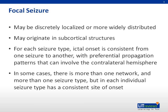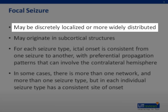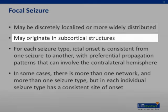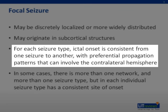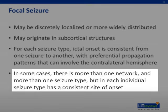A focal seizure, as mentioned earlier, originates from networks within one hemisphere. It may be localized to a portion of the hemisphere or be more widespread. It may also originate from subcortical structures. Each seizure usually originates from the same source, and its pattern of spread is similar between episodes. In some individuals, there can be more than one epileptic network and seizure type. However, each of these has a consistent locus where it first starts.